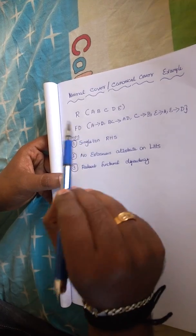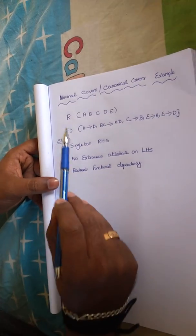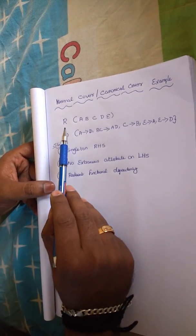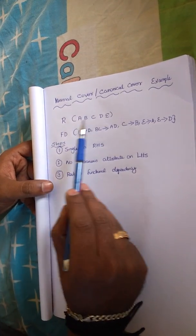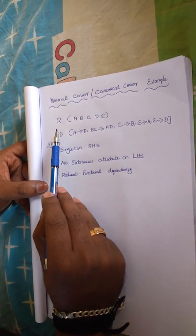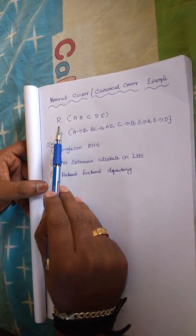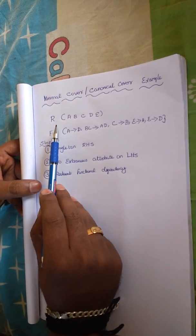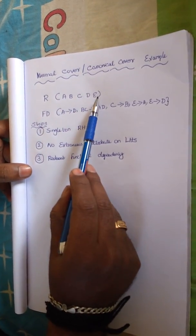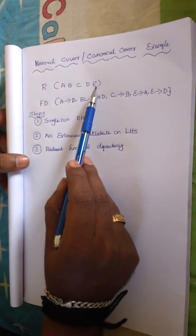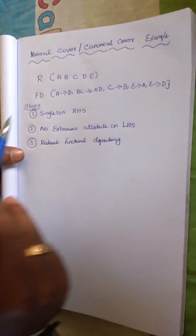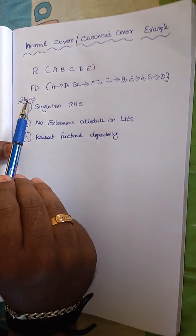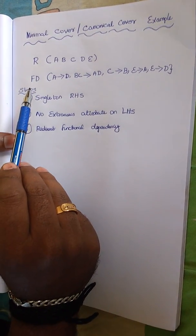I am Jai Krishnan. Today we are going to see a topic on Minimum Cover. The problem Minimum Cover — in this they will be giving two things. One is relation. The relation R is having attributes A, B, C, D, E. And along with this they will be giving a functional dependency.